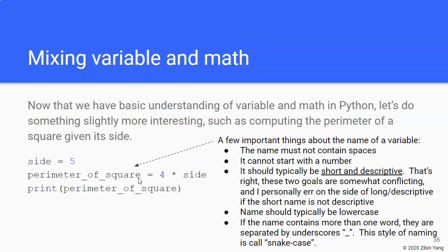Now the name of a variable should typically be short and descriptive, such as side. Now short and descriptive, they're kind of conflicted, right? Because when it comes to things like perimeter of a square, well that's not exactly short, but it is very descriptive. When you have to pick between short and descriptive, I personally would pick descriptive at the expense of the length of the variable.